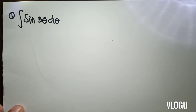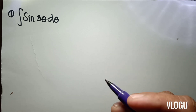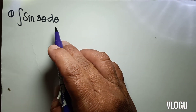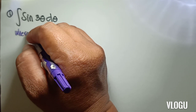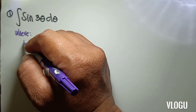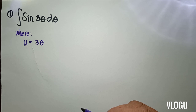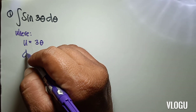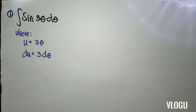Our first example is finding the integral of sin(3θ) dθ. We have a form of sin u du, where u is equal to 3θ. So our du is equivalent to 3 dθ.